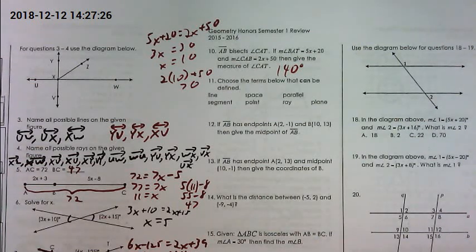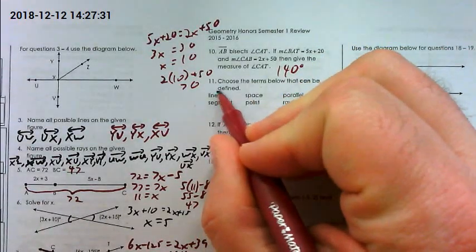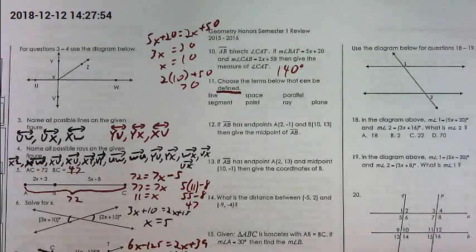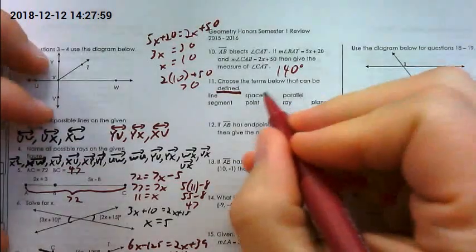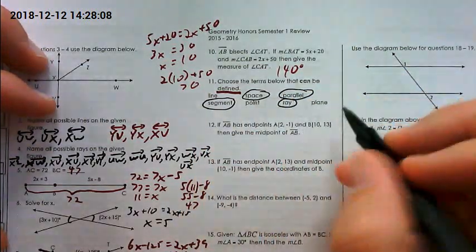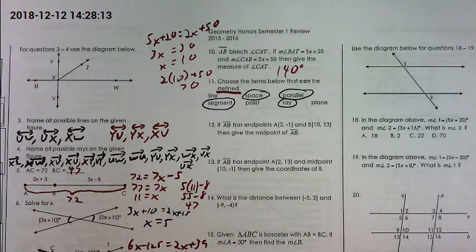Number 11, choose the terms below that can be defined. This was another one I don't think everybody read it. Who wants to know the ones that can be defined? The most common wrong answer that I got was point, line, and plane. Be very careful. It doesn't want the undefined terms of geometry, and it was asking which ones can be defined. So the correct answers here were space can be defined, parallel can be defined, segment can be defined, ray, and then the other three, point, line, and plane, those are your three undefined terms of geometry.